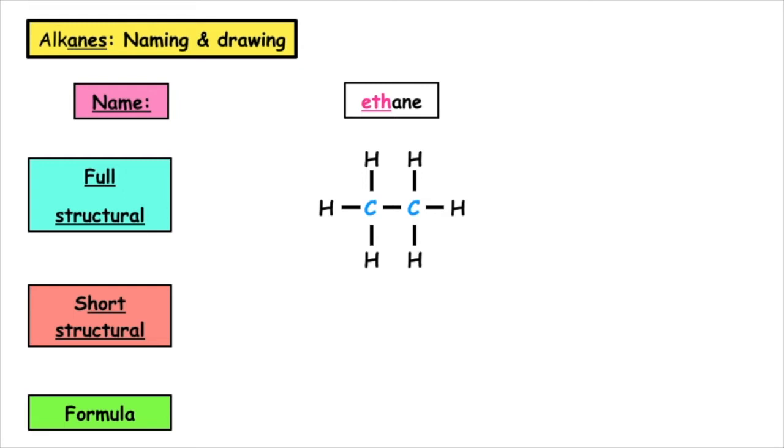If we were to change this into the shortened structural, we need to take each carbon by itself. The first carbon has three hydrogens attached, so we write CH3. And the second carbon also has three hydrogens attached, so that's CH3.